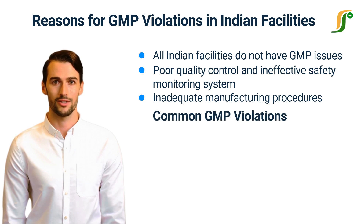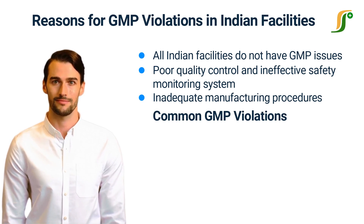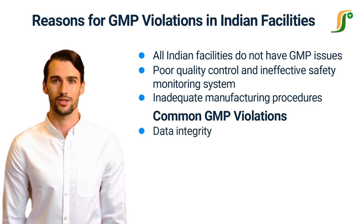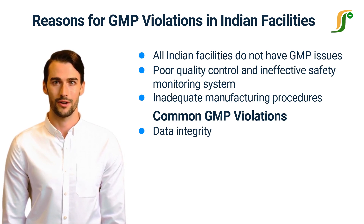Here are some common GMP violations found at Indian facilities. As per GMP inspections by different regulatory agencies, more than 100 types of GMP violations are found in Indian pharmaceutical manufacturing facilities. Data integrity issues are the most common, with data missing and data manipulation frequently observed. In some companies, data falsification is also observed by regulatory agencies, where false analytical data was created to release the product.